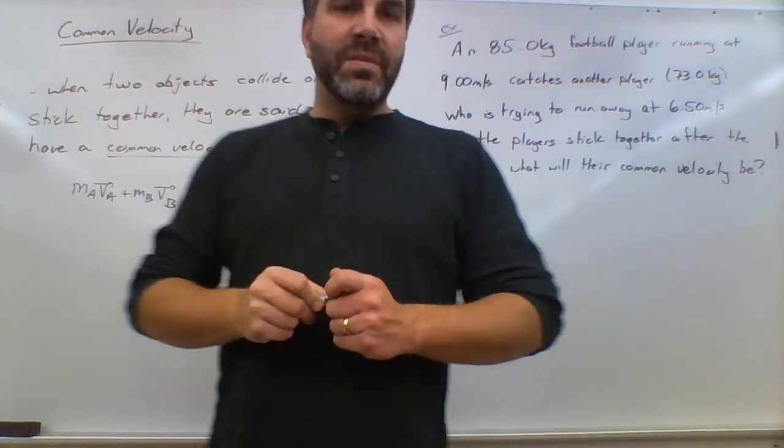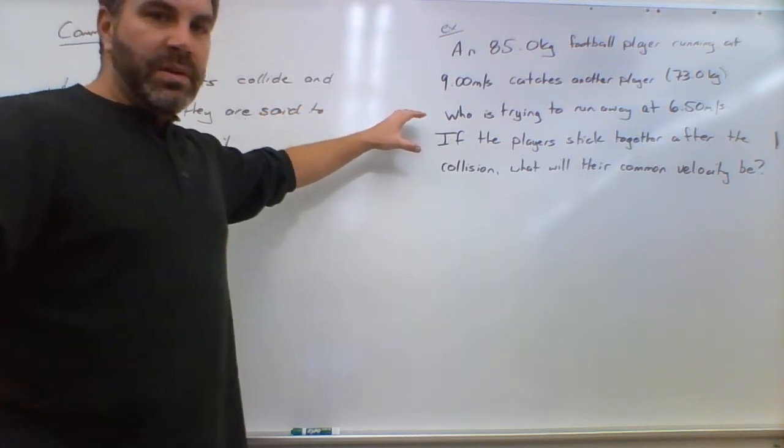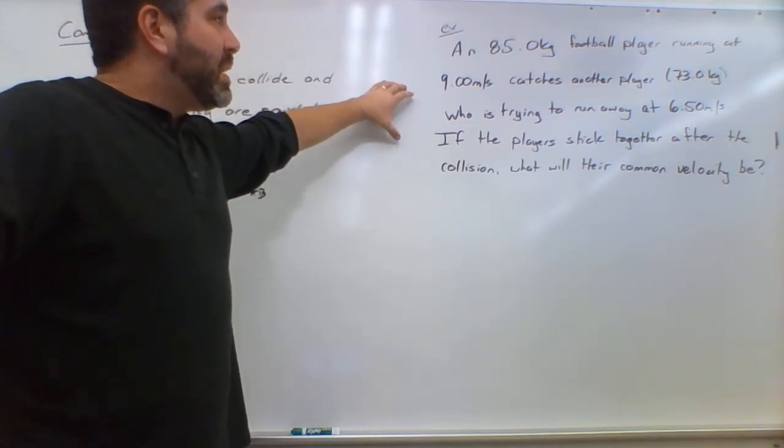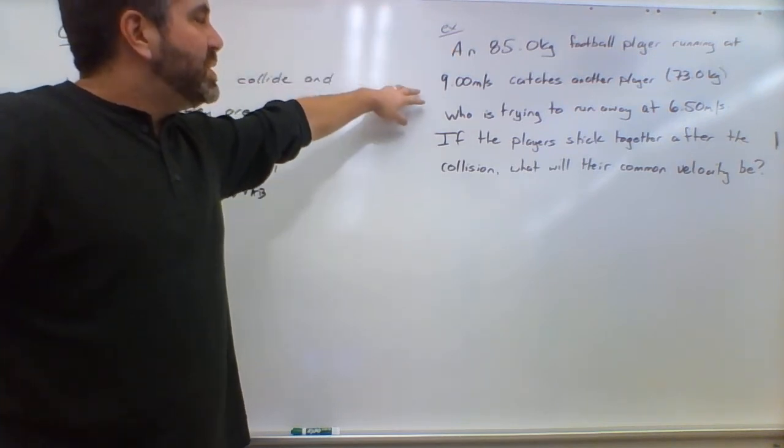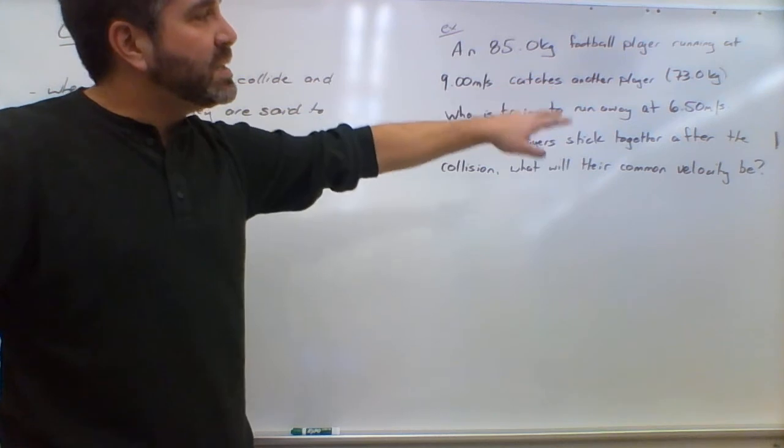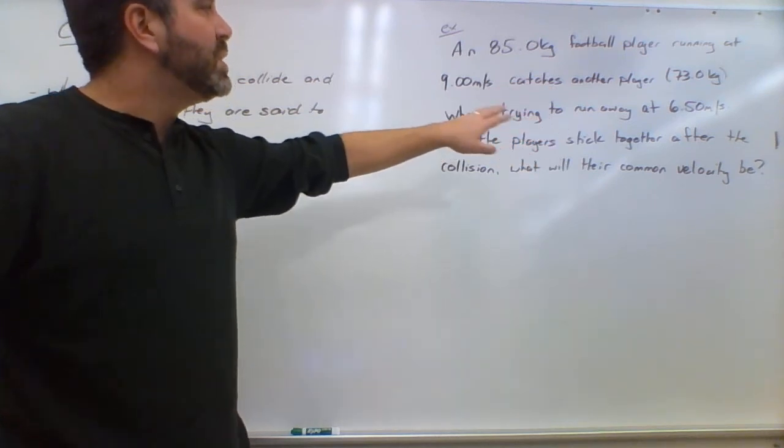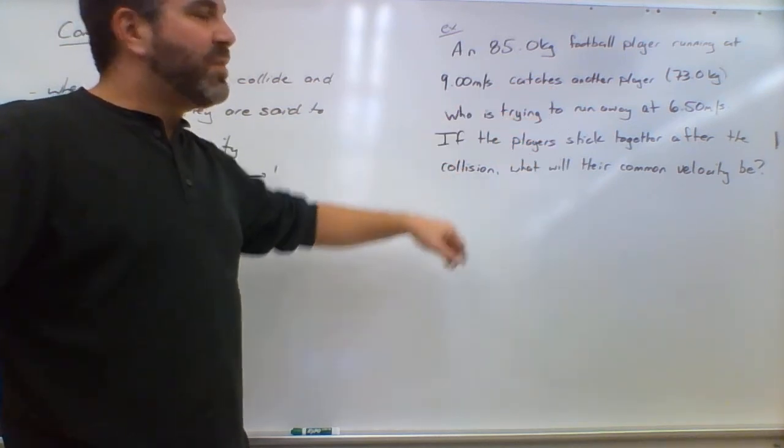So the example I've given you today involves football players. An 85 kilogram football player is running at 9.00 meters per second. They catch another player who only has a mass of 73.0 kilograms who is trying to run away at 6.50 meters per second.